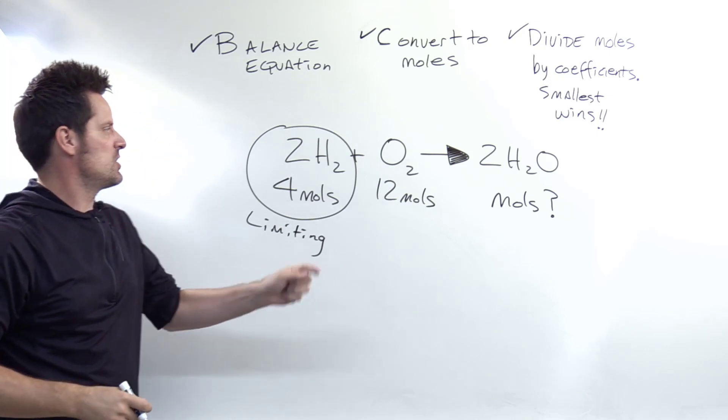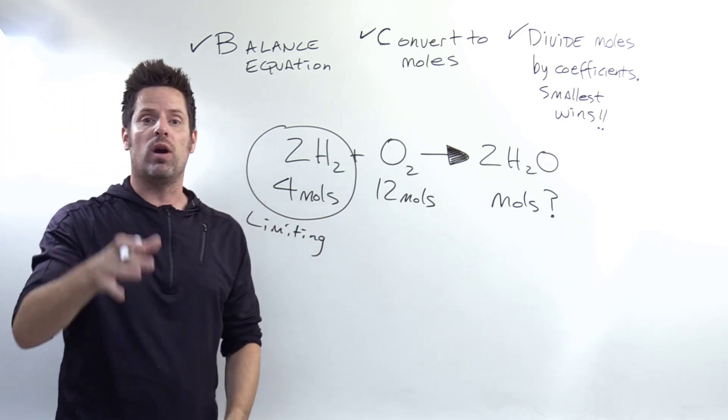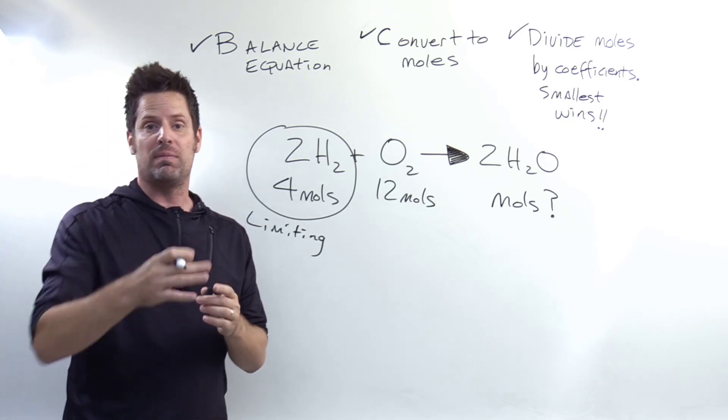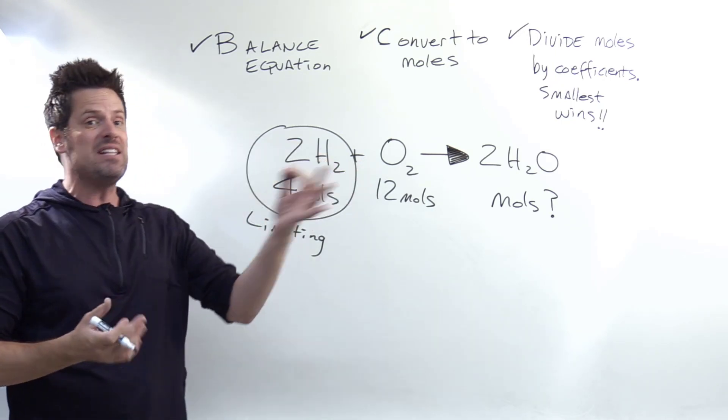The ending part of the question asks us to determine how many moles of H2O form. Remember that in any scenario, the number of moles of product you get will always be calculated from the limiting reactant. So that's why we went through the BCD process.